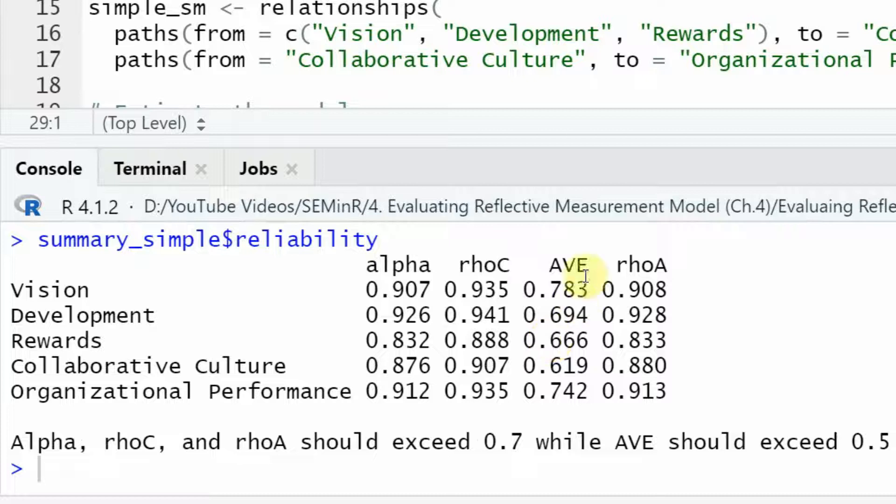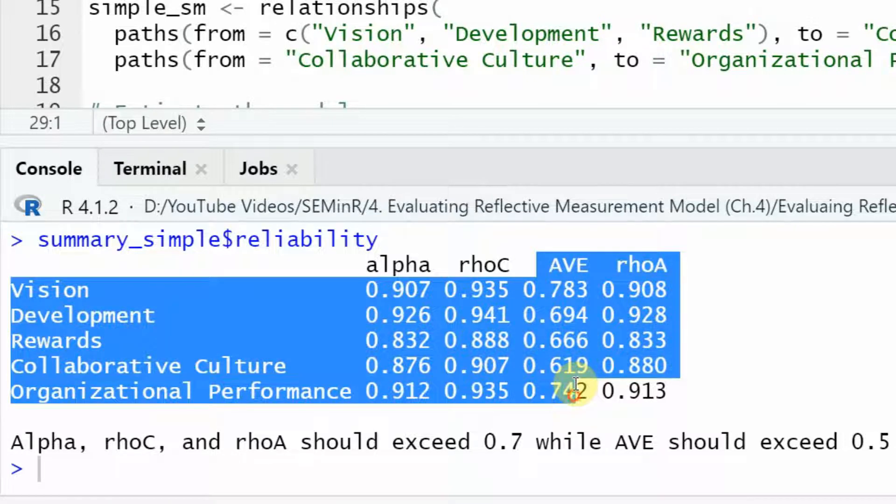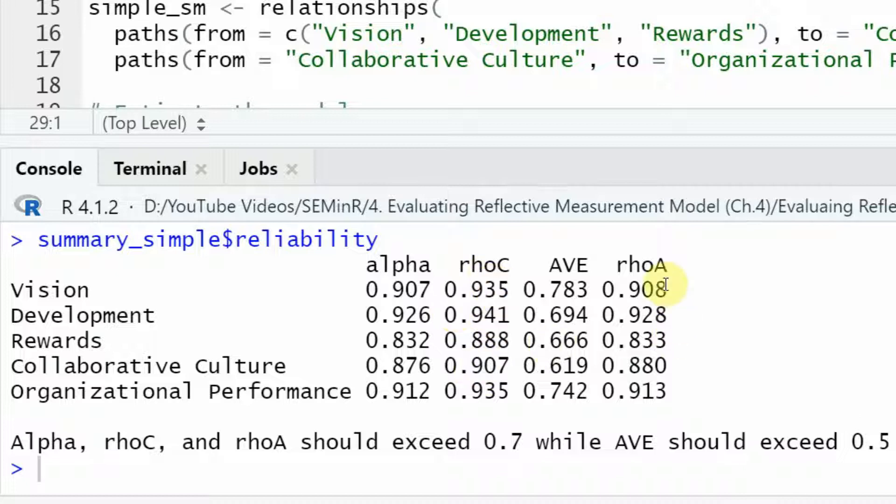Now this is your reliability. Look at this. Alpha values, rho C, AVE. What is this AVE? We are going to look into this later. Now this is your composite reliability. This is the rho A, the reliability that actually counters the criticism on Cronbach's alpha and composite reliability. And this value here should be in between these two values. Now is it in between these two values? Yes. Is this in between these two values? Yes. Is this in between? Yes. Is this in between? Yes. Because obviously 0.876 is less than 0.880 and 0.80 is less than 0.907. 0.913, yes. Because 0.912, then you get 0.913 and the greatest value is composite reliability.